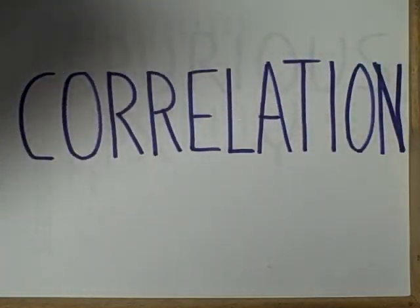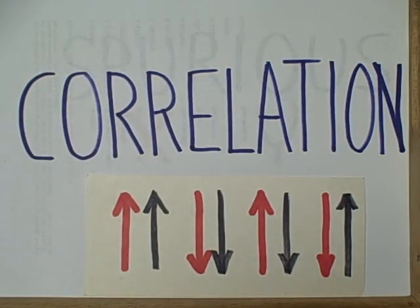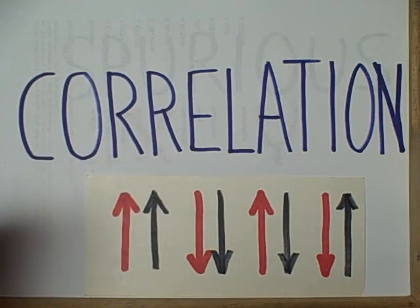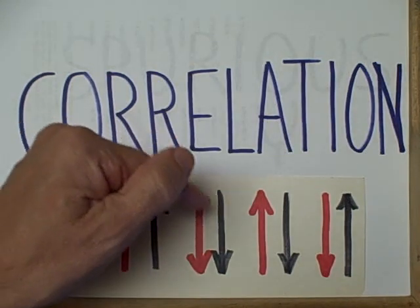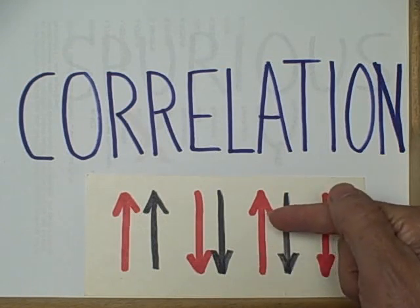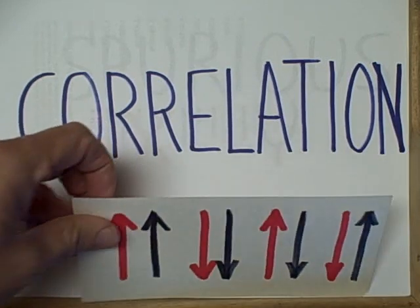Finally, we have correlation studies, where we simply measure two different variables and look to see if subjects who are high on one are also high on the other — indicating a direct relationship, a positive correlation. Or do subjects who are high on one variable tend to be low on the other, indicating an inverse relationship, a negative correlation.